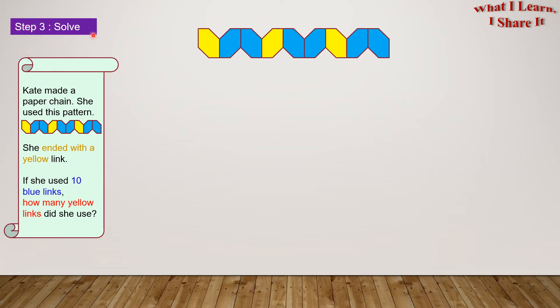Step three: Solve. So here is Kate's paper chain, and the pattern is yellow, blue, blue. Yellow link, and then there's a blue link, and then a blue link. Then there's another yellow link, then another blue, and then another blue. And then another yellow, and then another blue, and then another blue.